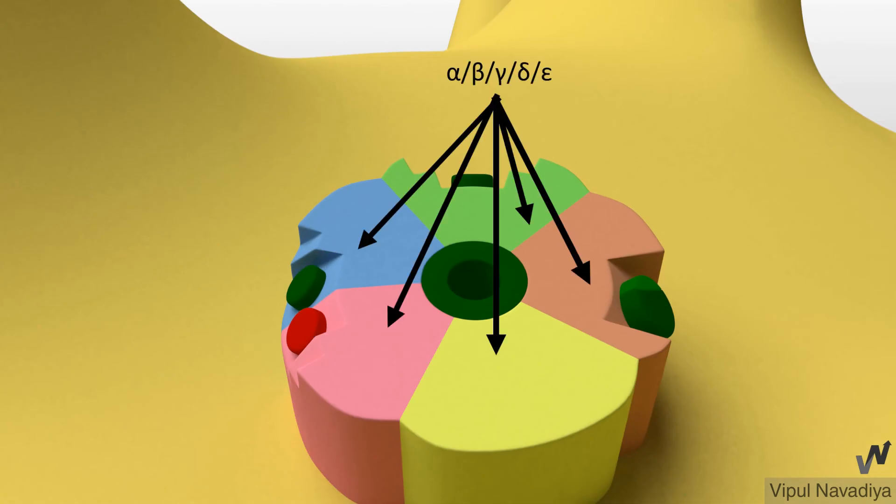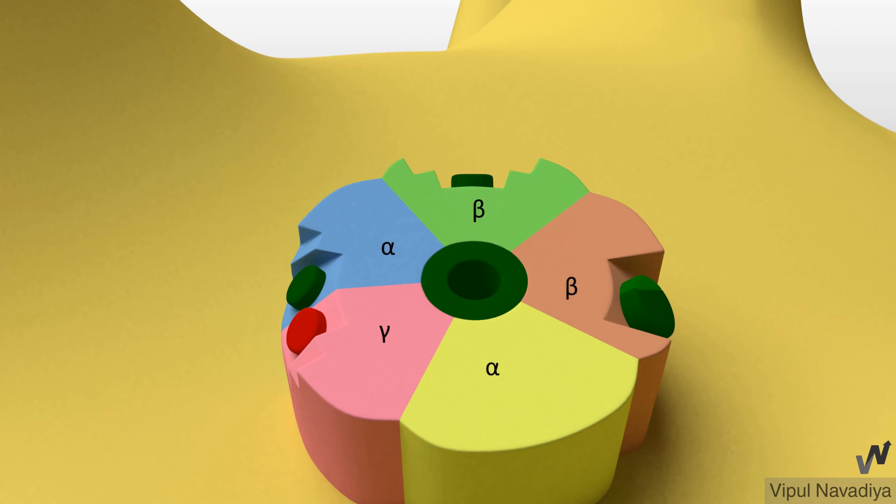Structurally it is a tetramer or pentamer of varying combination of alpha, beta, gamma, delta, epsilon, etc. subunits. Most common form has two alpha, two beta and one gamma subunit.